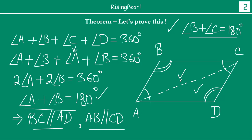Now, Dostho, if you look at quadrilateral ABCD, what we have is BC parallel to AD and AB parallel to CD. This is the definition of a parallelogram — that both pairs of opposite sides are parallel. So when this is true, we call it a parallelogram. So we have proved that if opposite angles — both pairs of opposite angles — are equal, then quadrilateral ABCD is a parallelogram.